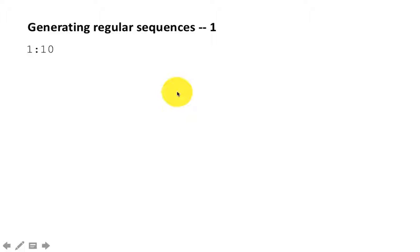The easiest way to generate a regular sequence is using the colon operator, 1:10. As you already know, it generates a vector consisting of the numbers 1 to 10.